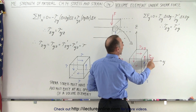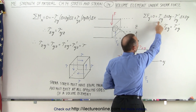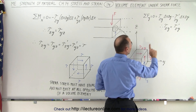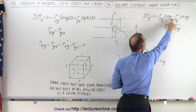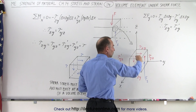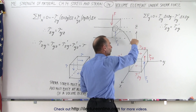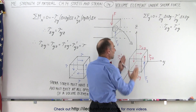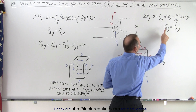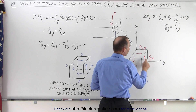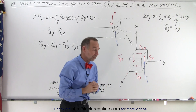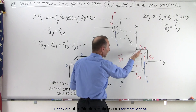The tau_yz shear stress multiplied by the area gives us the shear force on this side, which must be compensated for by the shear stress on the other side multiplied times the area — the shear force on the other side — and they cancel each other out so that the sum of those forces adds up to zero. This implies that the magnitude of the shear stress here must equal the magnitude of the shear stress on the other side of that small volume element. We can do the same on this side and on that side.